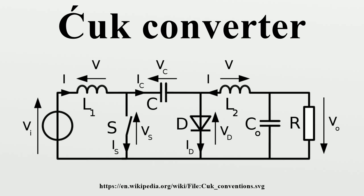In the off-state, inductor L1 is connected in series with the input and C, and as the diode D is forward biased, L2 is directly connected to the output capacitor. In the on-state, inductor L1 is directly connected to the input source, and inductor L2 is connected in series with C and the output capacitor. The converter operates in the on-state from T equals zero to T equals DT, and in the off-state from DT to T. The average values of VL1 and VL2 are therefore zero to satisfy the steady state conditions. Using these equations, the average voltage across L1 can be written in a form that is the same as that obtained for the buck-boost converter.